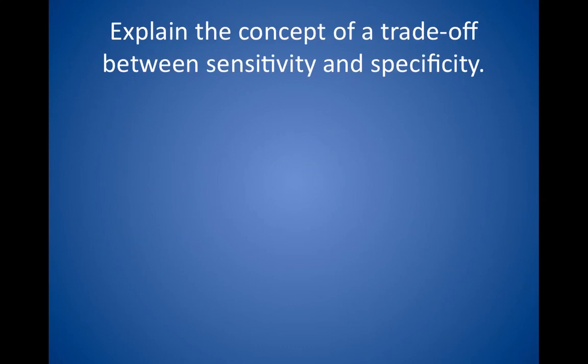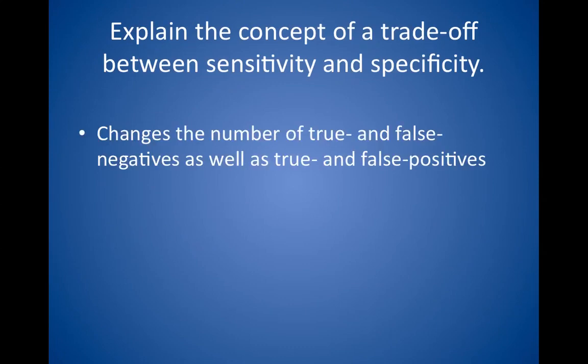Explain the concept of a trade-off between sensitivity and specificity. The trade-off between sensitivity and specificity is a classic statistics question. For example, you should understand how changing the cutoff glucose value in screening for diabetes — or changing the value of any of several screening tests — will change the number of true and false negatives as well as true and false positive results. If the cutoff glucose value is raised, fewer people will be called diabetic; there will be more false negative results and fewer false positive results. Whereas if the cutoff glucose value is lowered, more people will be called diabetic, with fewer false negative results and more false positive results.